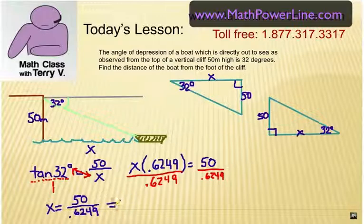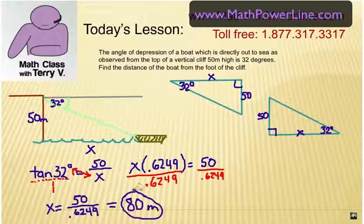X equals 50 over the tangent 32 degrees, which again is 0.6249. And either way I do it, when I do that division, I'm going to get my answer, which is 80.0 something. So we're going to call it 80 meters. The boat is 80 meters away from the cliff.